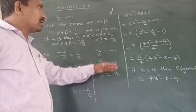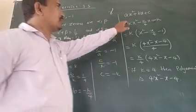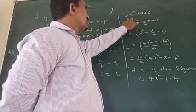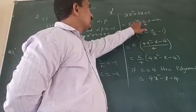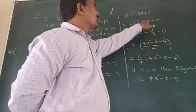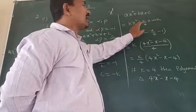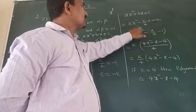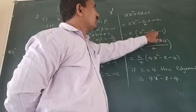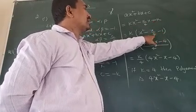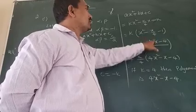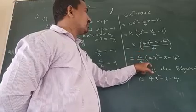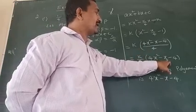Now take the quadratic polynomial: ax square plus bx plus c. The value of a is k, b is minus k by four, c is minus k. Take k as a common factor: k times (x square minus x by four minus one), which equals k by four times (four x square minus x minus four).